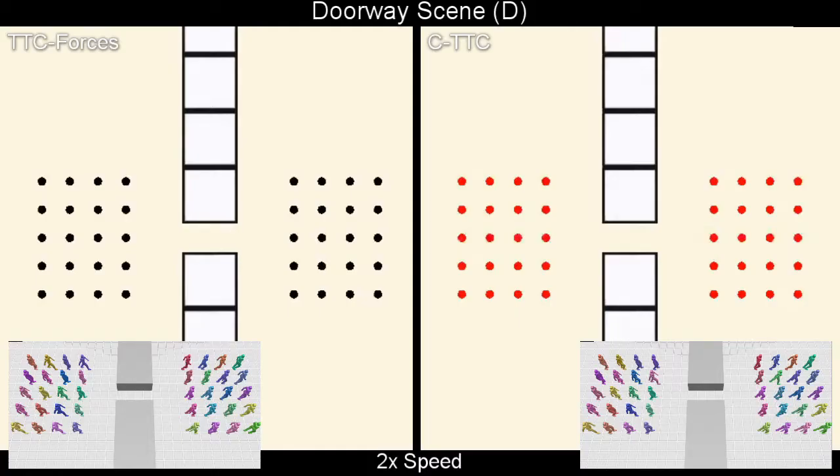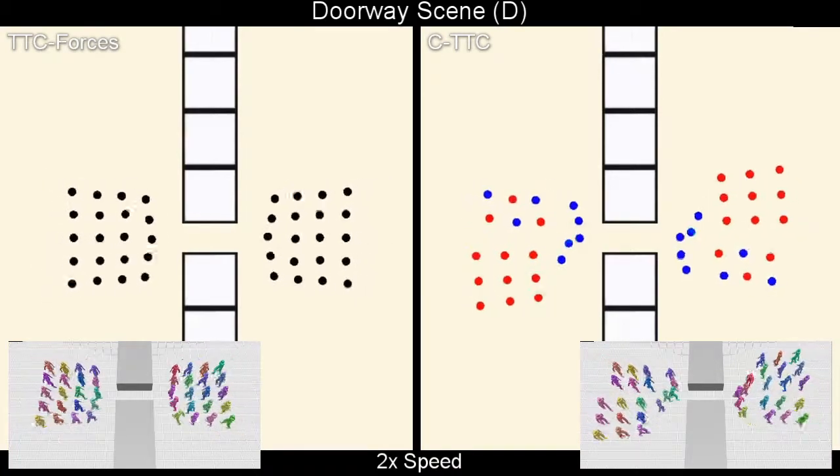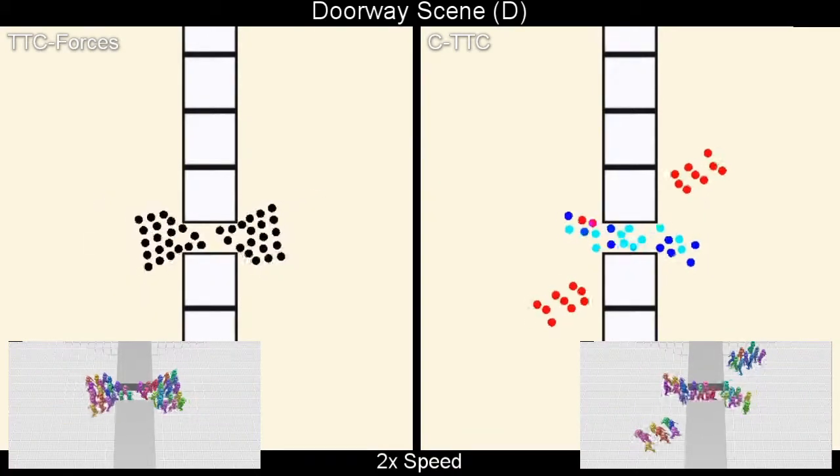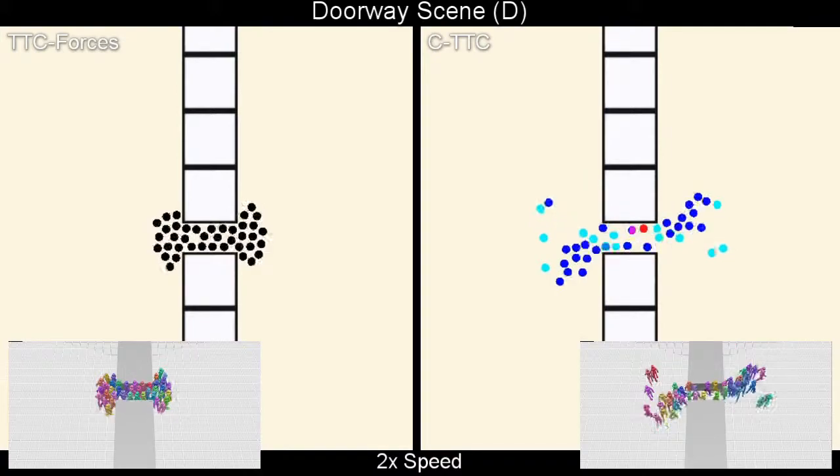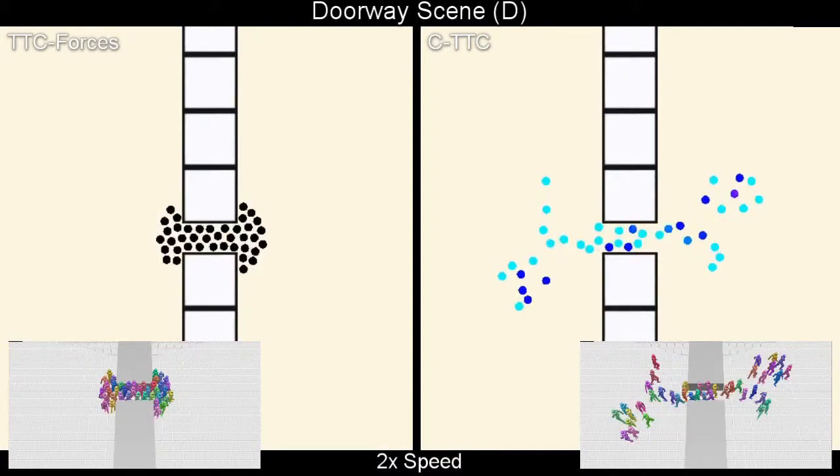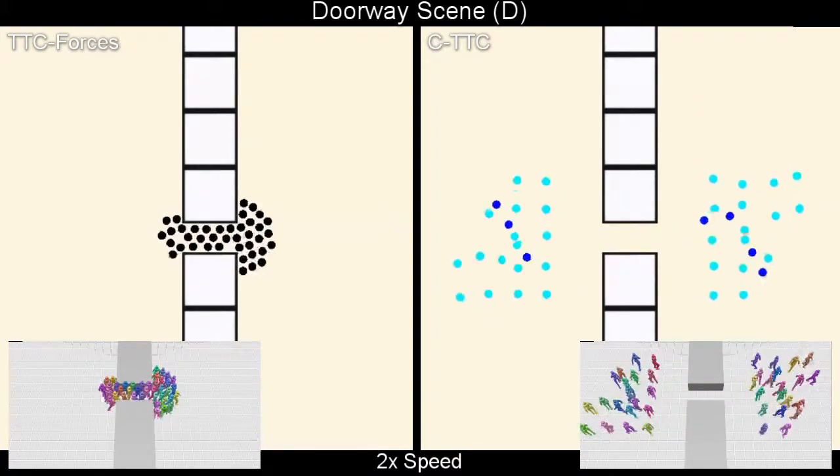Note that we color the agents according to their communication values. Emerging from our method are apparent central norms. In this example, agents communicating red wait, those communicating blue pursue their goal, and teal agents repel each other into lanes.